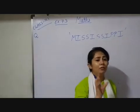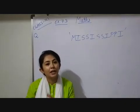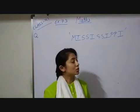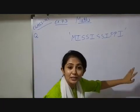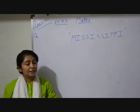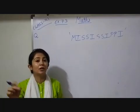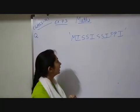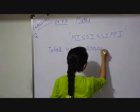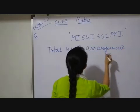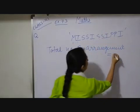Whenever a word is given and we have to find the maximum number of arrangements possible, first we count how many letters there are — that becomes your numerator. Then in the denominator, we check how many times each letter repeats and divide by that factorial. MISSISSIPPI has 11 letters total, so the numerator is 11 factorial.